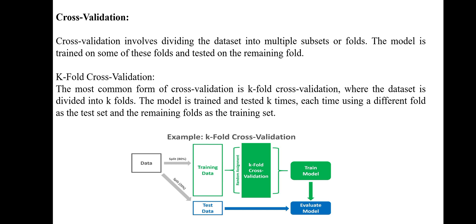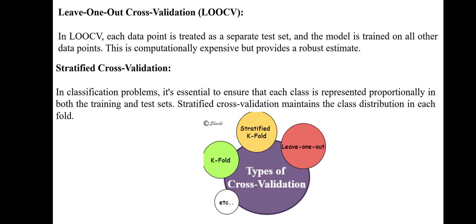The second type of cross-validation is Leave-One-Out Cross-Validation (LOOCV). In LOOCV, each data point is treated as a separate test set and the model is trained on all other data points. This is computationally expensive but provides a robust estimate.